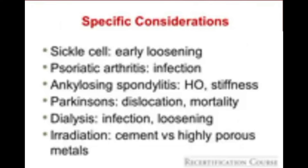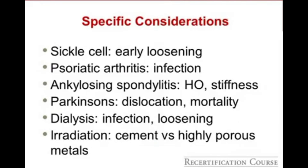Specific complication associations after total hip arthroplasty include: sickle cell patients — early loosening; psoriatic arthritis — infection; ankylosing spondylitis — stiffness and heterotopic ossification; Parkinson's patients — high rate of dislocation and mortality; dialysis patients — highest risk for infection (due to recurrent venipuncture and bacteremia) and loosening due to bone quality. Irradiated patients should be treated with cemented implants due to concern for lack of bone ingrowth, though some highly porous metals have shown promise.